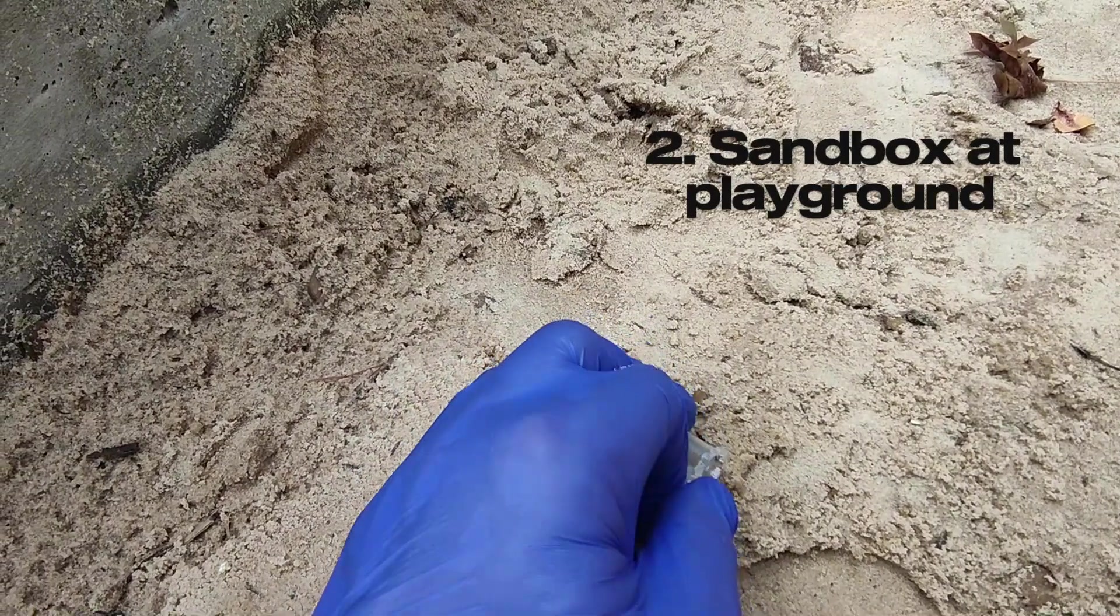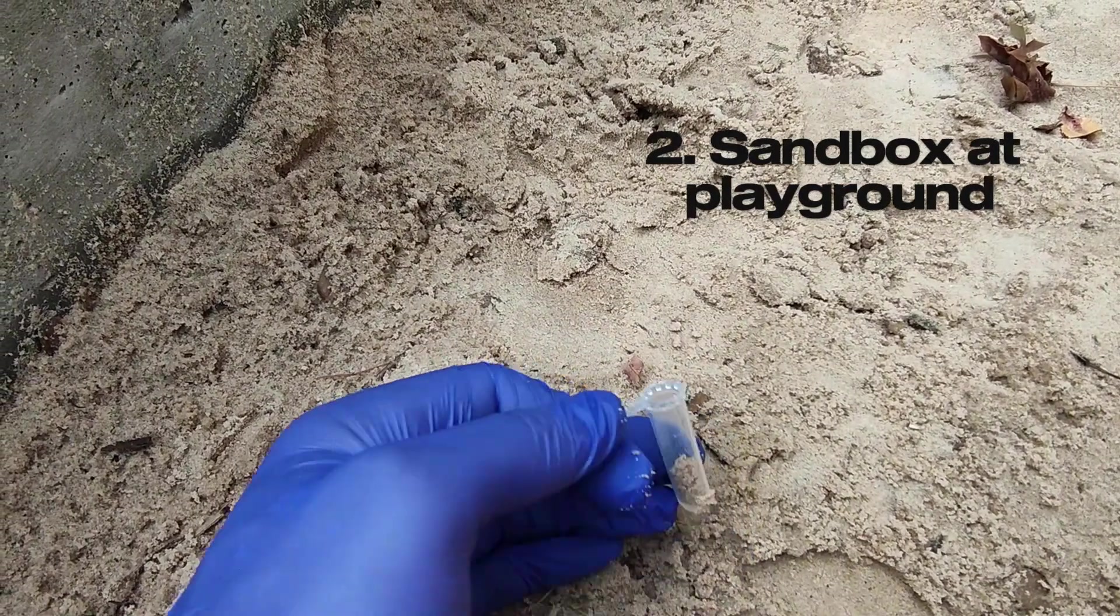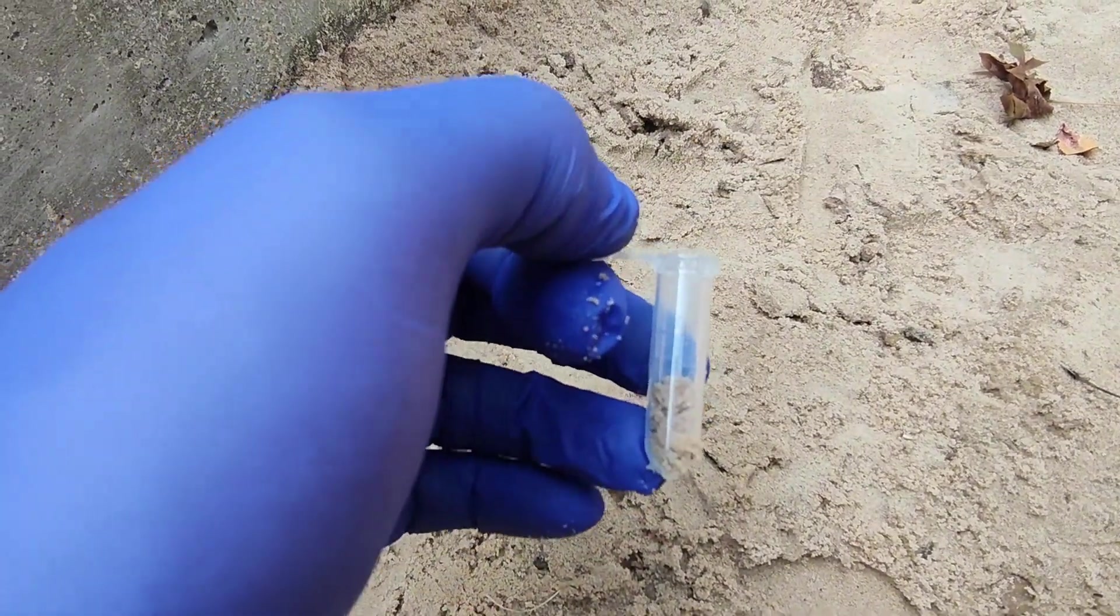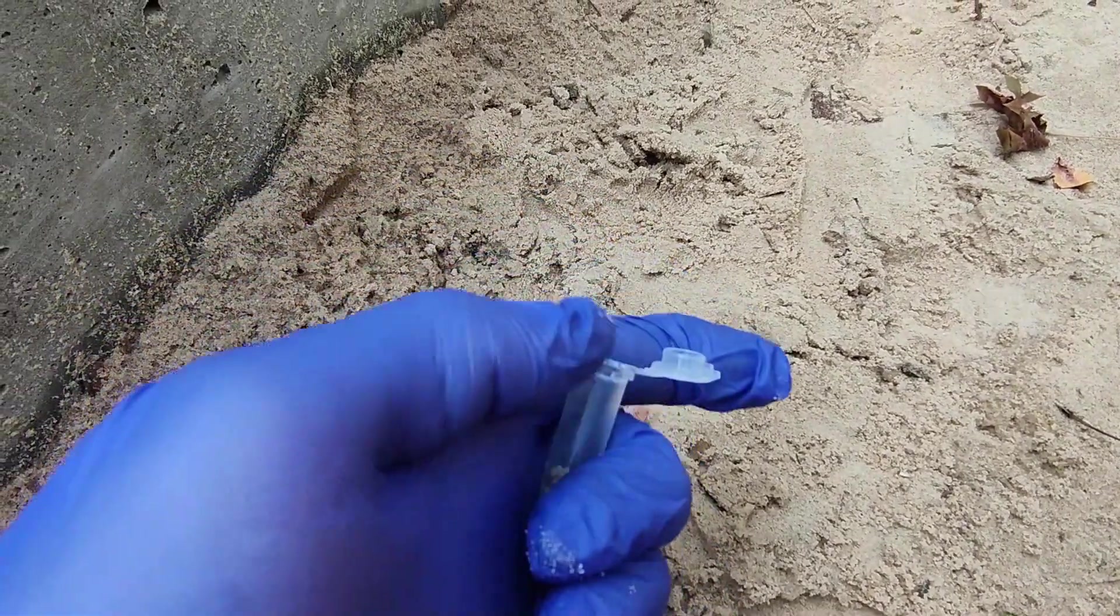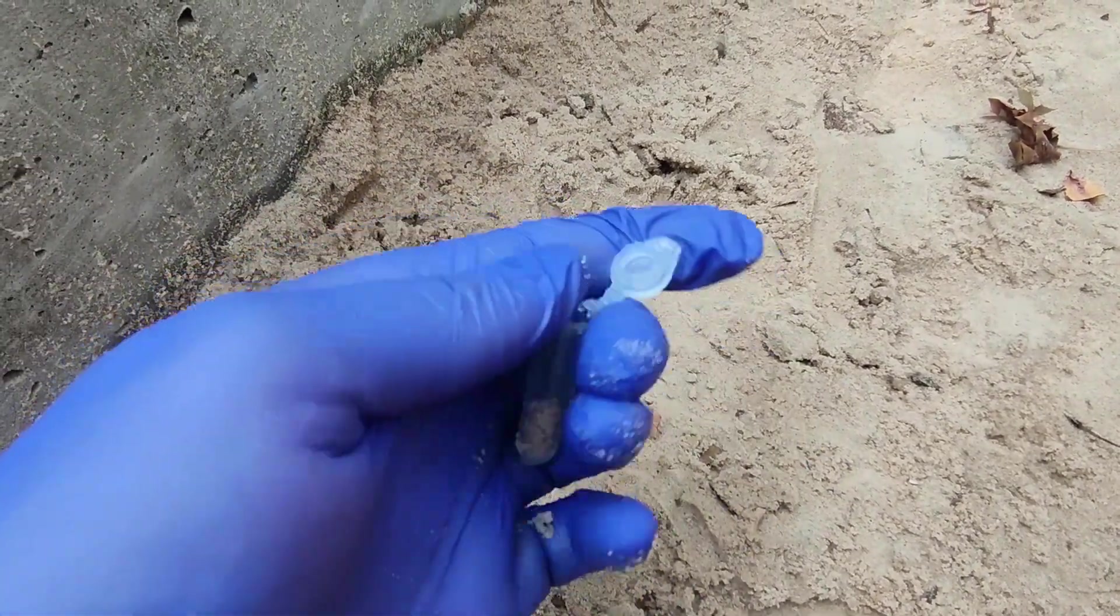The second sampling site is a sandbox in a playground. The sampling will be done in the afternoon. We will collect the sample directly into an Eppendorf tube. The samples will be labeled similarly for further analysis.